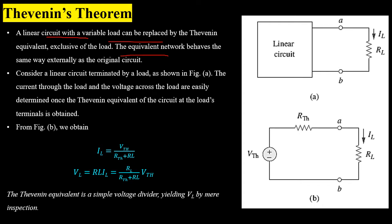Consider a circuit terminated by a load as shown in figure A. The current through the load and the voltage across the load are easily determined once the Thevenin equivalent is obtained, because the resultant circuit is in series form and we can simply apply the voltage divider rule or Ohm's law to determine current through the elements.